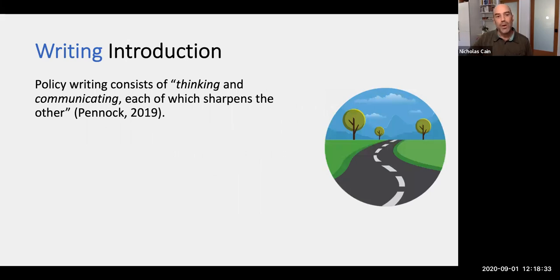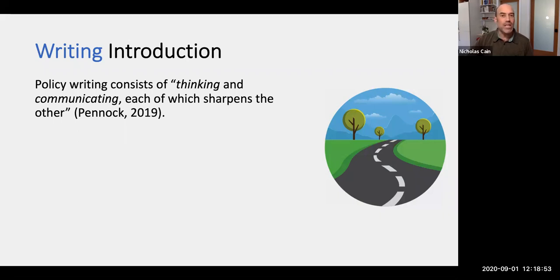To start off, policy writing consists of thinking and communicating, each of which sharpens the other, according to Andrew Pennock. The point here is that writing in a policy context is a little bit different than writing in a typical academic, journalistic, or creative context. The reason is that we want to be as clear as possible, as concise as possible, and cause the reader to do the least amount of work to understand the points we're trying to bring across.